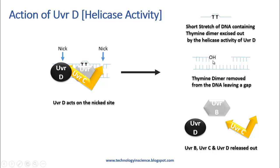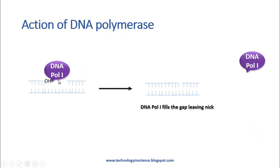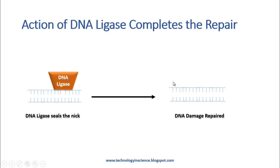This leaves a gap with an OH overhang. All other proteins — UVRB, UVRC, and UVRD — are released from the DNA strand, leaving the strand with an OH group overhang and a gap. To repair this strand, the gap needs to be filled. This is done by DNA polymerase I, which identifies the 3' OH overhang and starts incorporating complementary nucleotides.